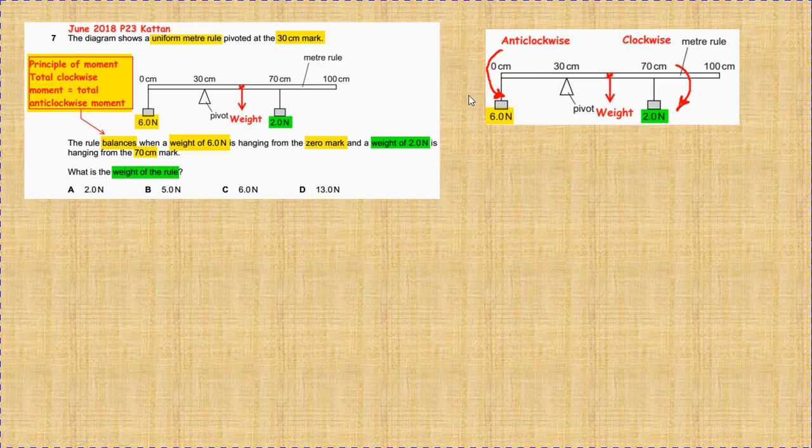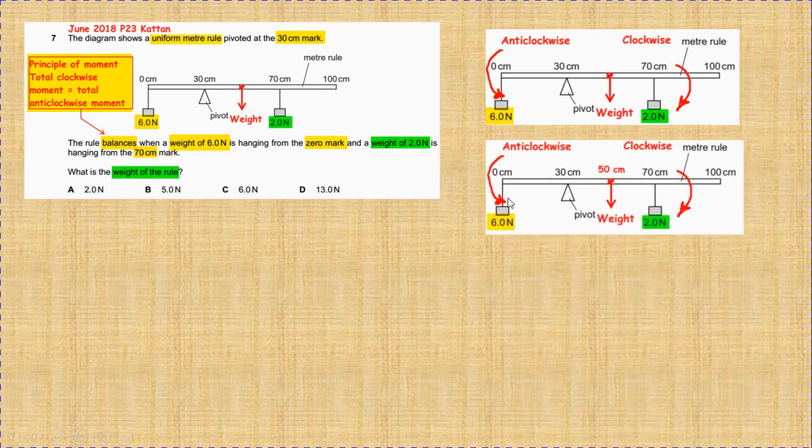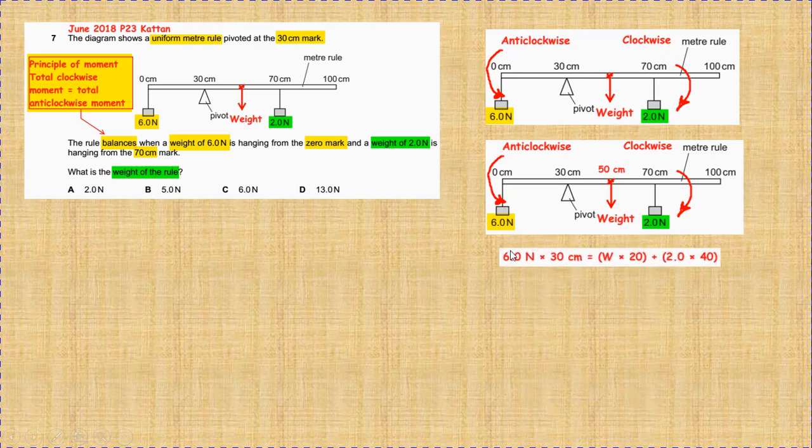Is the force, or the line of action of the applied force, times the perpendicular distance from the pivot. So from the anticlockwise side, it's 6 newtons times 30 centimeters.